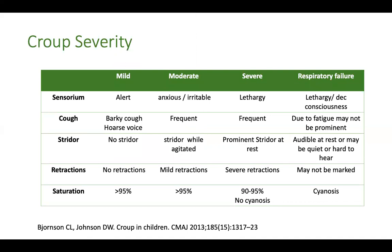Croup can be of varying severity. When a child presents with fever, running nose, barking cough, and now stridor, you need to determine whether it is severe. What makes croup severe? An abnormal sensorium, lethargy, frequent cough, prominent stridor even at rest, and retractions. Remember, cyanosis is a very late sign of croup — even in severe croup, oxygen saturation may be maintained, but retractions may be quite prominent.